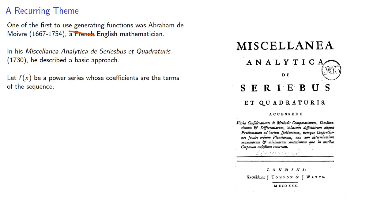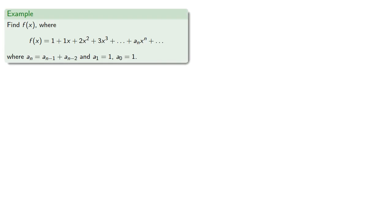Let f(x) be a power series whose coefficients are terms of the sequence, and then manipulate the series to get a closed form expression for f(x). For example, we're looking for a power series where the coefficients are determined from a recurrence relationship where the first two terms are ones. In other words, our coefficients form the Fibonacci sequence.